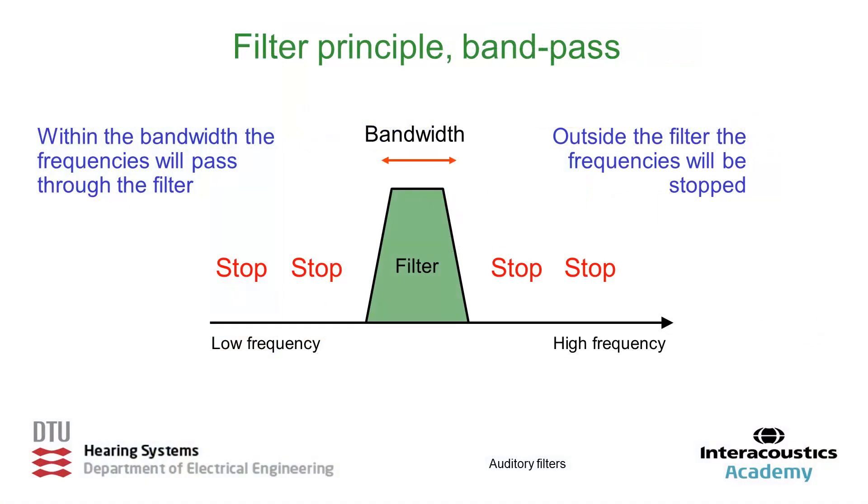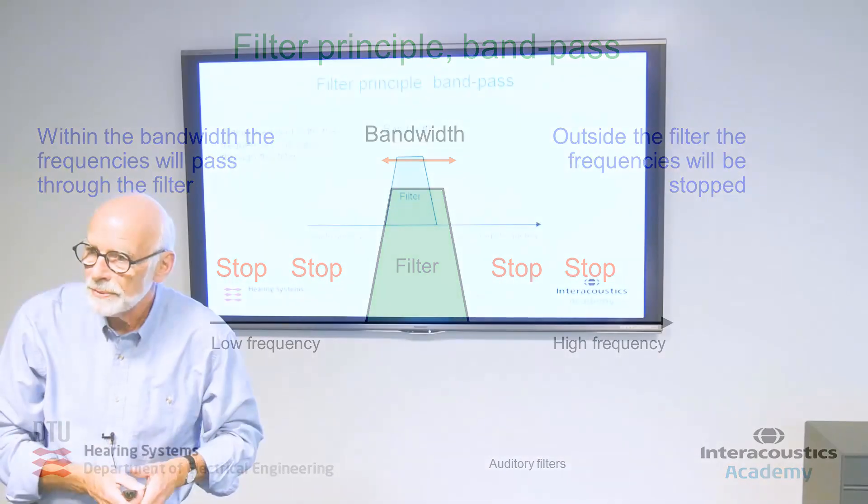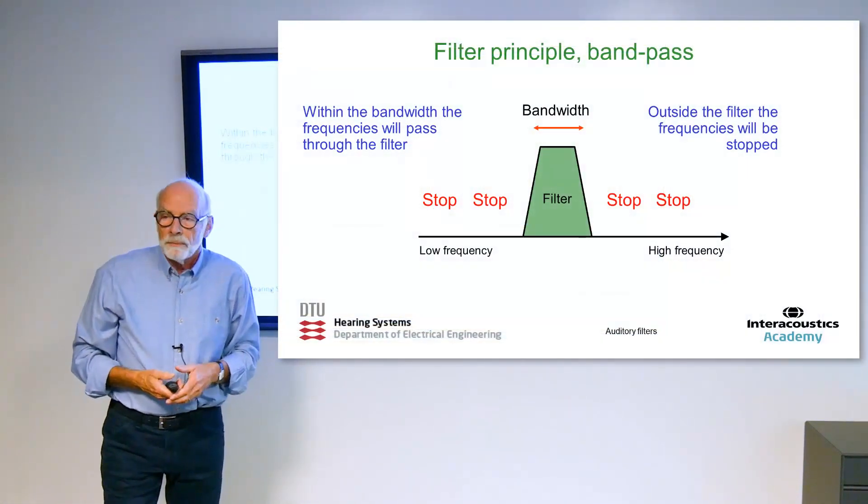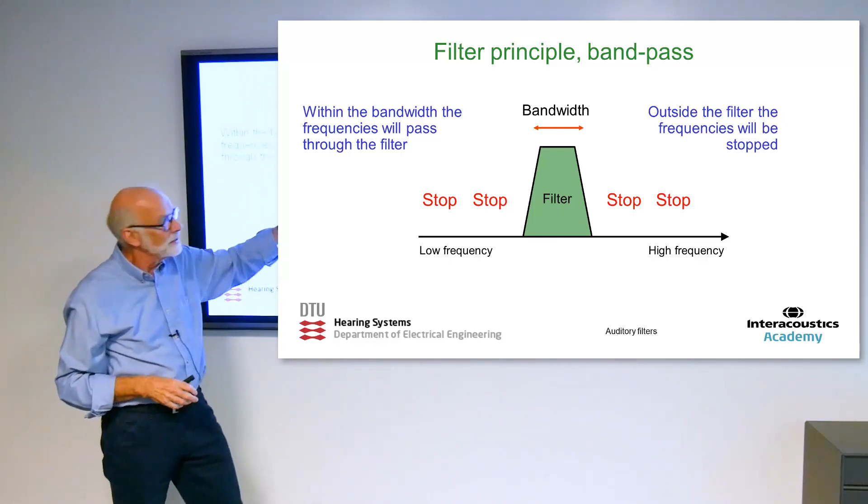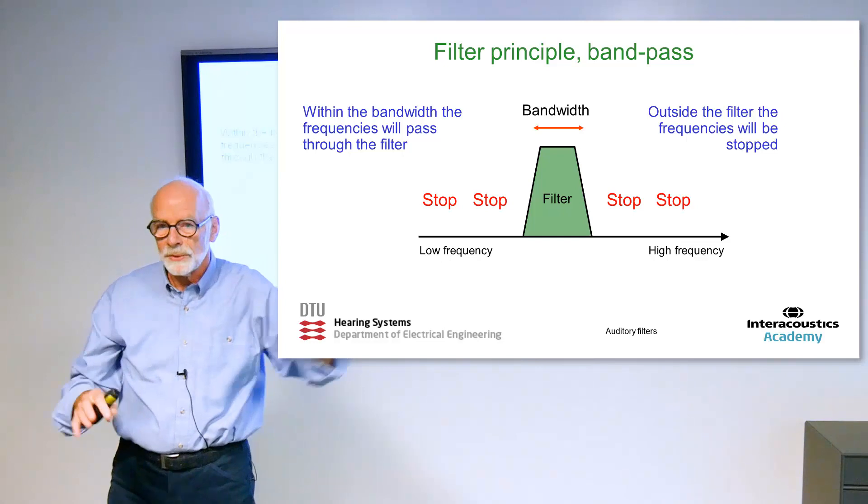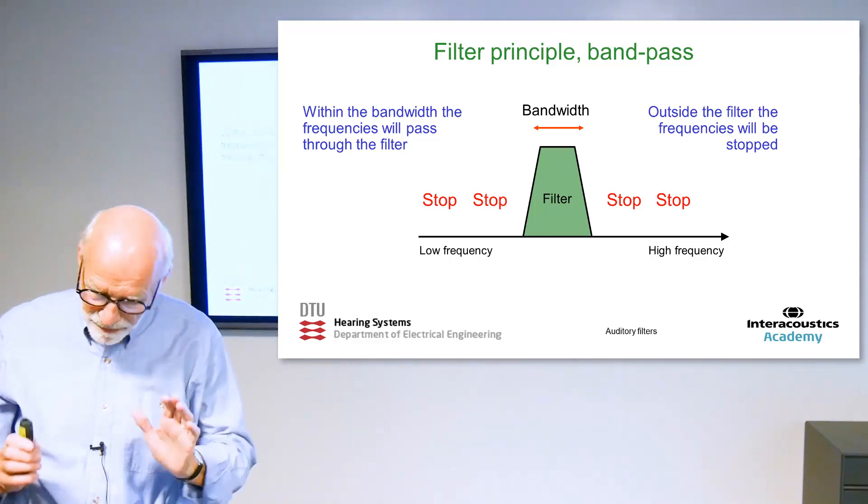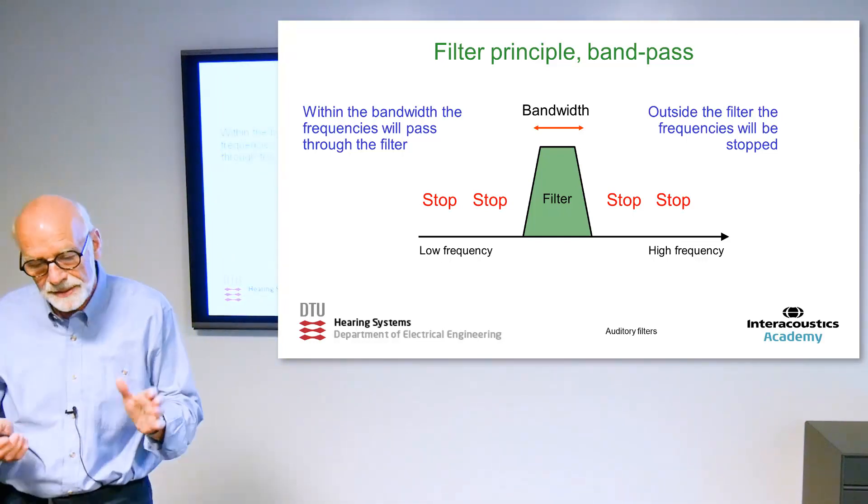We have a filter there, as you can see here on the screen, low frequencies, high frequencies, and the filter here with some bandwidth, the width of the filter. And the idea with the filter is that when we have frequencies within the bandwidth of the filter, those frequencies will be passed through the filter. But outside the filter, those frequencies that lie outside the filter, they will not come through. So they will be stopped at the filter position. That's the filter idea.